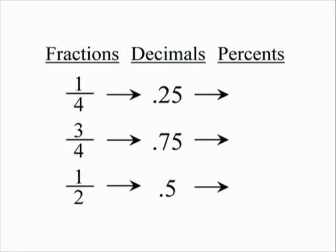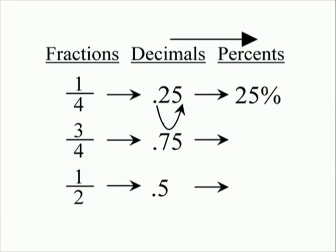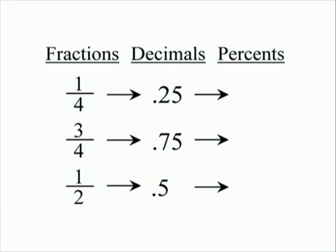Let's look at our board again. If we're moving from decimals to percents, we're moving to the right. So to change twenty-five hundredths to a percent, we move the decimal two places to the right and attach a percent symbol. It will always be two places, either to the right or to the left depending on which direction you're going. When a decimal point winds up at the end of a whole number, you can drop it. So the fraction one-fourth equals the decimal twenty-five hundredths, which equals twenty-five percent — just three different ways to write the same thing.